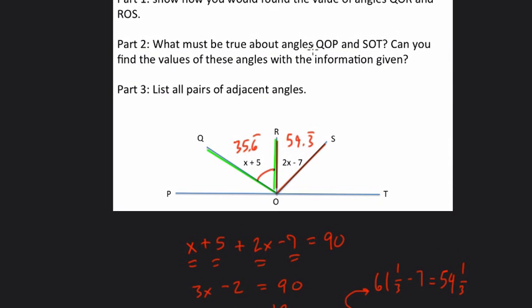What must be true about angles QOP and SOT? QOP is here, SOT is here. All together, we have 180 degrees. We have 90 in the middle, so they must add to 90 degrees as well. We don't know if they're equal, but we do know they must fill that remaining gap to form the 180 degree angle.